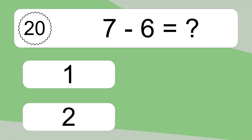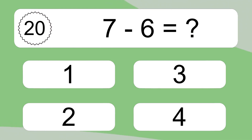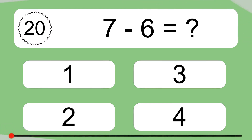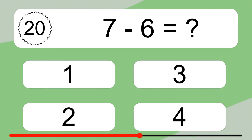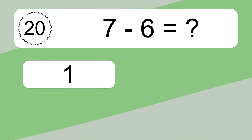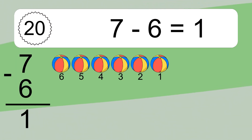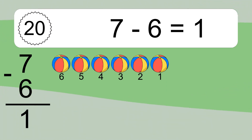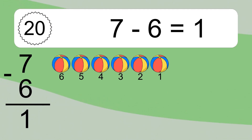7 minus 6 equals what? 7 minus 6 equals 1. Let's count it: 6, 5, 4, 3, 2, 1.